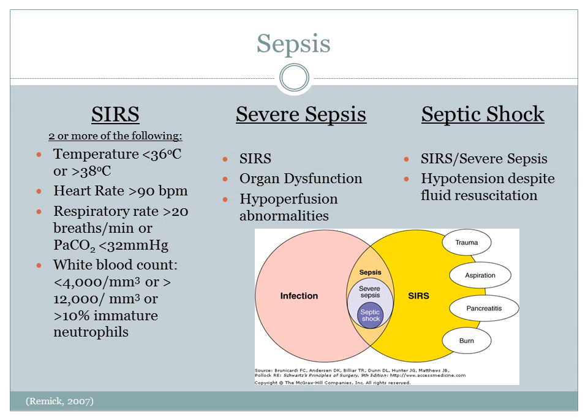Let's further define sepsis and SIRS. Sepsis is categorized as sepsis, severe sepsis, and septic shock. Sepsis is when you have SIRS in the presence of infection. SIRS is when two or more of the following are present: body temperature of less than 36 degrees Celsius or greater than 38; heart rate greater than 90; respiratory rate greater than 20; or a PaCO2 less than 32; a white blood count of less than 4,000 or greater than 12,000; or when you see greater than 10% of immature neutrophils.